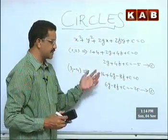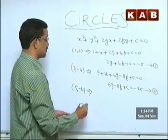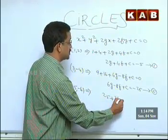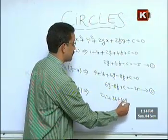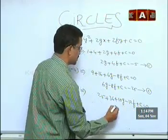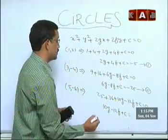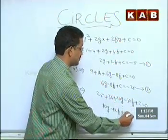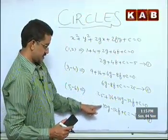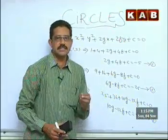In the first equation also, we did the same thing as in the first problem — we are getting equations. And it is passing through (5,-6), so I will get one more equation. 5² + (-6)² = 25 + 36, and 2g×5 = 10g, 2f×(-6) = -12f, giving us 10g - 12f + C = -61. This is the third equation. Look at these three equations. These are all linear equations.